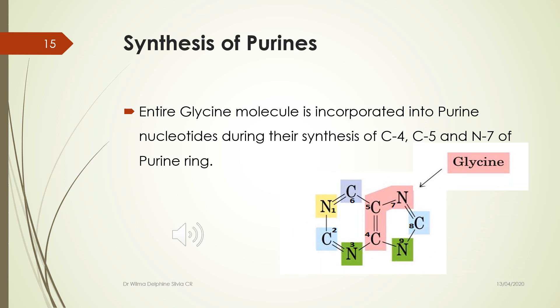The whole molecule of glycine is incorporated into the purine ring at positions C4, C5, and N7.